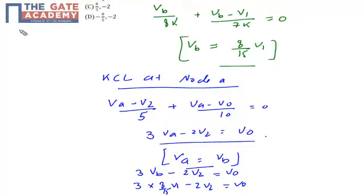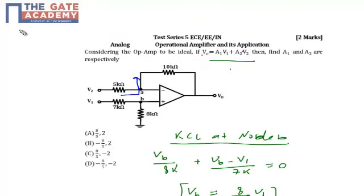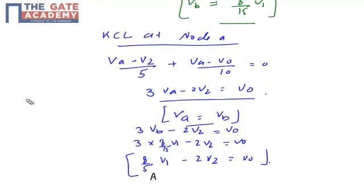Comparing this equation with the given equation V0 equals A1 V1 plus A2 V2, we find that A1 is equal to 8/5 and A2 is equal to minus 2.